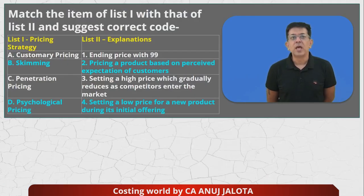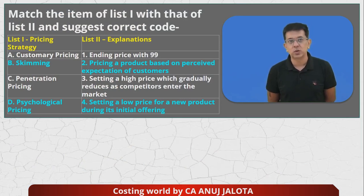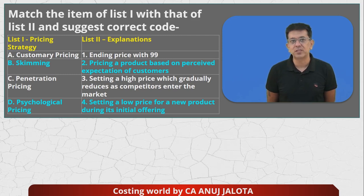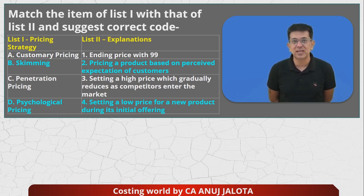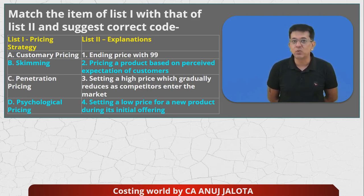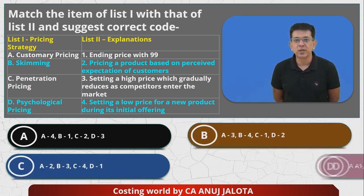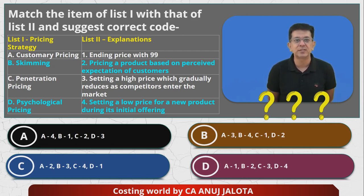Let's start. Match the items of List One with List Two and suggest the correct code. List One: A) Customary pricing, B) Skimming, C) Penetration pricing, D) Psychological pricing. List Two: 1) Ending price with 9-9-9, 2) Price of a product based upon perceived expectation of customers, 3) Setting a price which gradually reduces as competitors enter the market, 4) Set a low price for a new product during the initial offering. I'm not reading the four answer options.